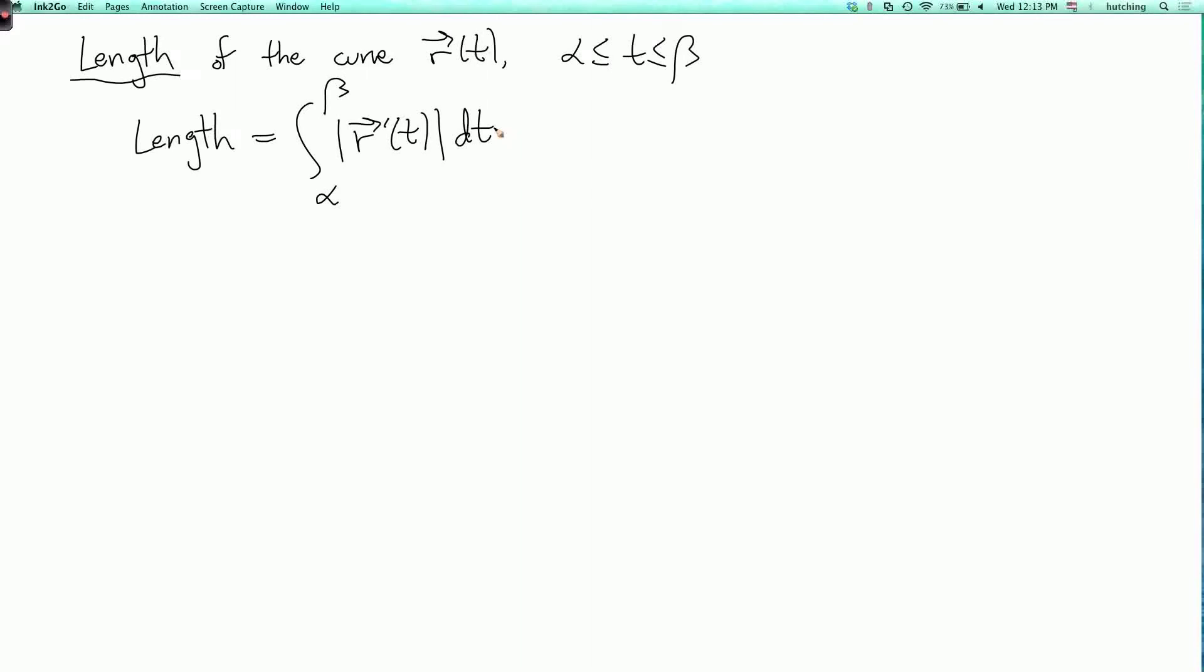Now when we're regarding the curve as a vector-valued function, there's some other things we can do. For example, we can multiply vectors. Actually, there are three different kinds of multiplications. There's multiplication of a vector by a scalar, the dot product of two vectors, and the cross product of two vectors. And this leads to three versions of the product rule.